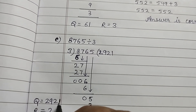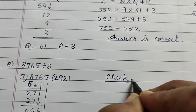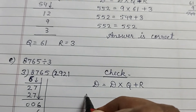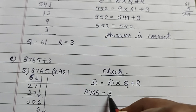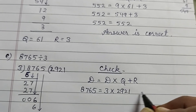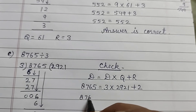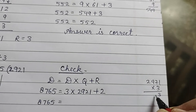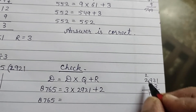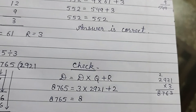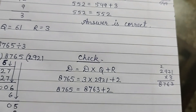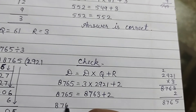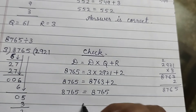Now check: Dividend equals Divisor into Quotient plus Remainder. 8765 equals 3 into 2921 plus 2. Multiply: 3 into 1 is 3, 3 into 2 is 6, 3 into 9 is 27, 3 into 2 is 6. Result is 8763, plus remainder 2 gives 8765. So 8765 equals 8765. Answer is correct.